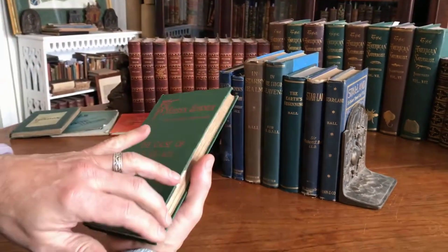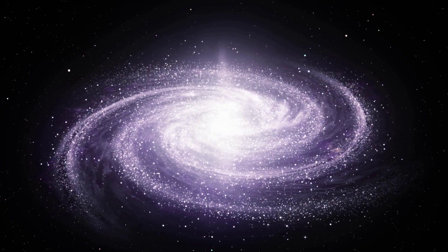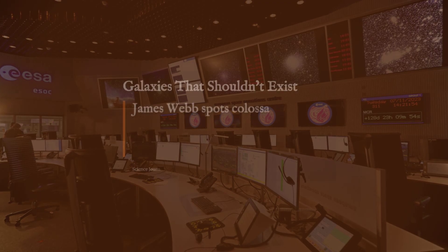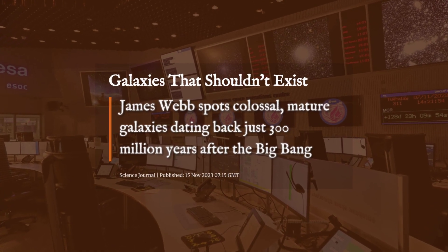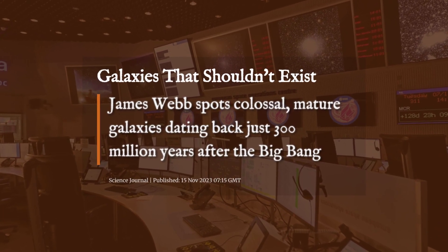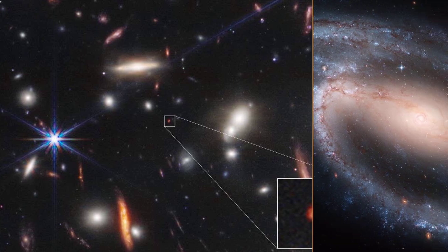For decades, scientists trusted the cosmic rulebook. Galaxies should grow slowly, taking billions of years to reach the size of the Milky Way. But James Webb just found ancient galaxies so massive, so well formed, that by the universe's own timeline, they simply shouldn't exist.